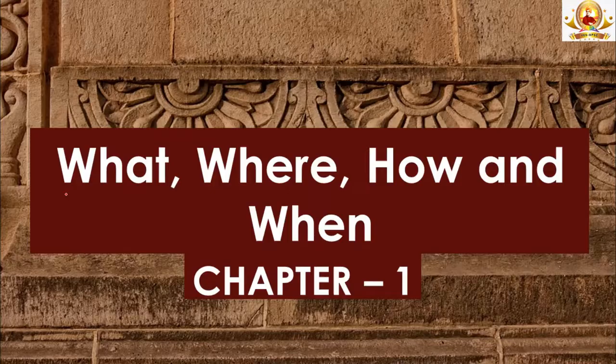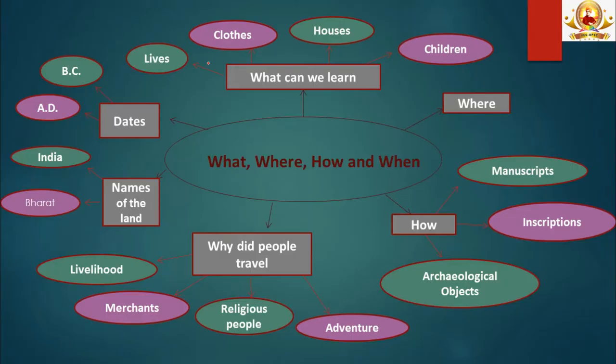Let us start with Chapter 1, 'What, Where, How and When,' which gives us a brief overview of the things we learn when we study history and the sources of history. The chapter discusses topics like what we can learn from studying history, the geographical spread of early people, how we know about the past, why people used to travel, how our country got its names, and how events of the past are dated.